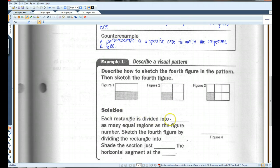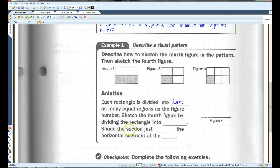Each rectangle is divided into twice as many equal regions as the figure number. So, in figure one, it's divided into two. Figure two, it's divided into four. Figure three, it's divided into six. So, in order to sketch the fourth figure, we have to divide the rectangle into eighths.